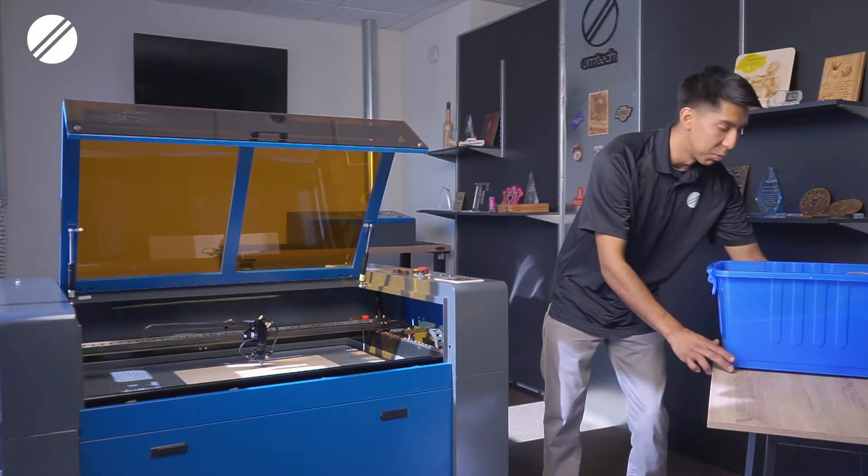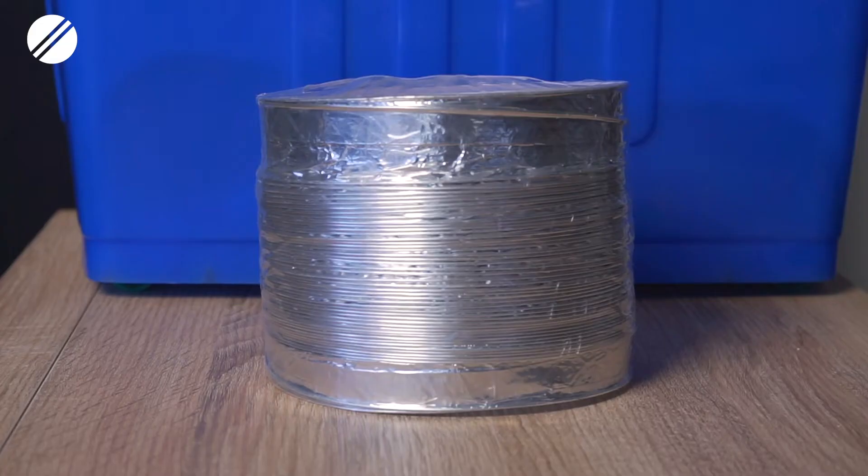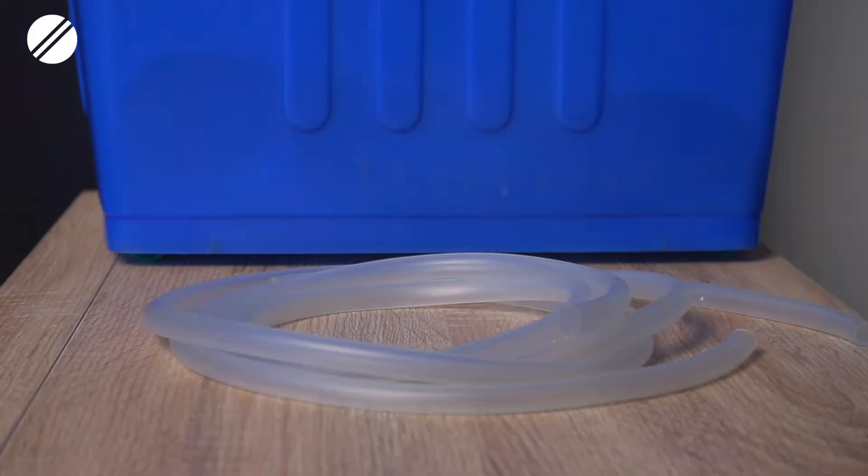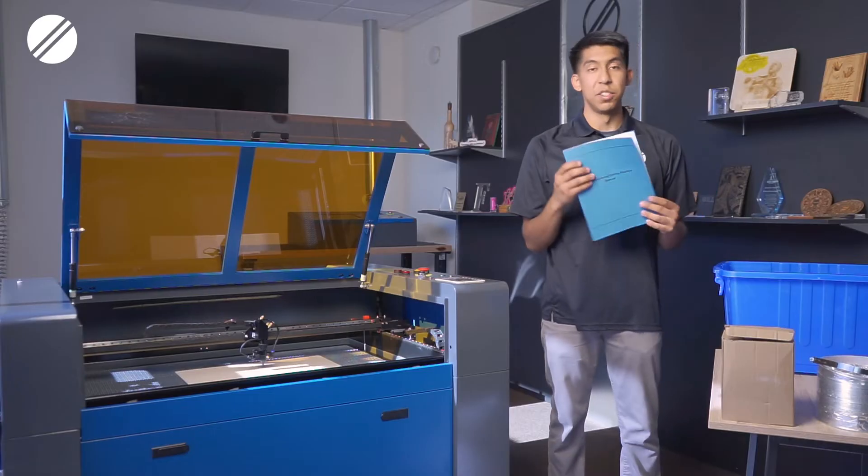With your purchased machine, you will receive this accessory kit. In this kit you will find your water pump, the venting hose for the air exhaust, two hoses for either your water pump or water chiller, the clamp for the venting hose, and the machine's manual.